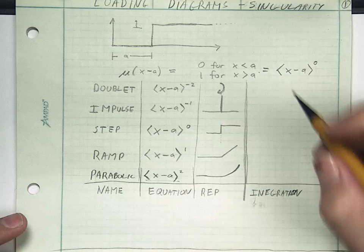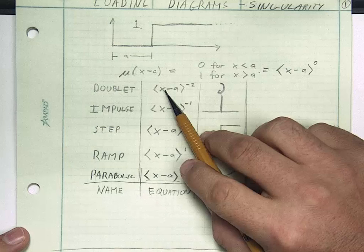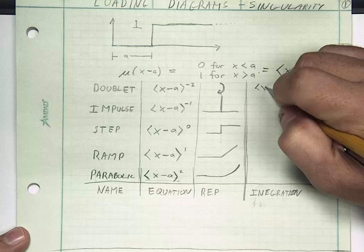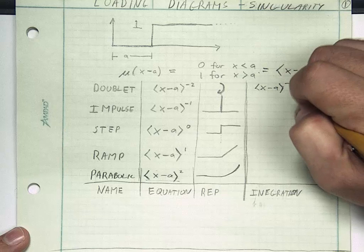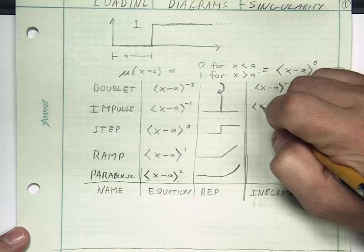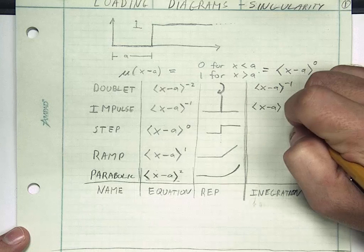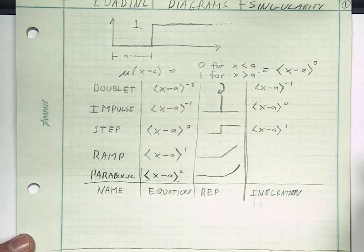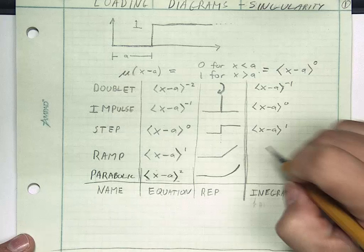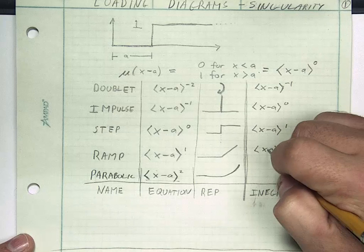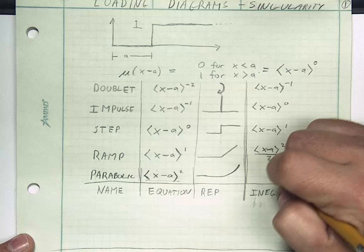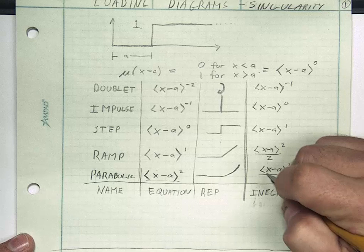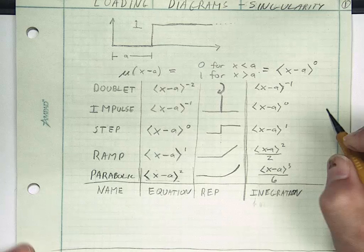There's some fairly high level math as to why these singularity functions integrate the way they do. But the important thing for you to know is that the doublet, as it integrates, becomes the impulse. So the integration of the doublet is actually x minus a to the minus 1, the impulse. If I integrate the impulse, I get the step function. If I integrate the step function, I get a ramp function. Now this gets a little tricky. If I integrate the ramp function, I'm going to get the parabolic function divided by 2. If I integrate the parabolic function, I'm going to get another function raised to the third over 6.